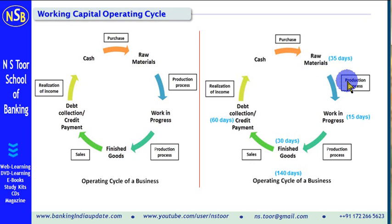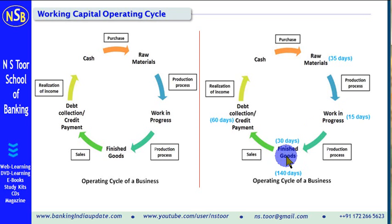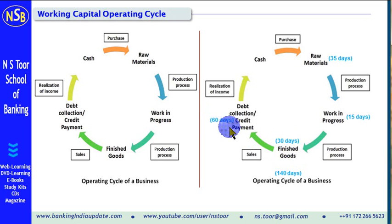This raw material is put into machines, and machines take their own time to convert it into finished goods. In our example, we have taken a 15-day conversion period — this period may be 7 days, 2 days, or 2 months, depending upon the production process. Once goods are produced and become finished goods, these cannot be sold immediately; they have to be maintained for some time. We are assuming here that 30 days of finished goods have to be maintained in stock, and after that, these are sold.